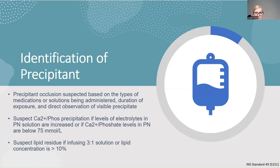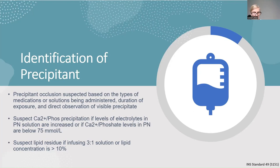To identify a precipitant, review the medication list for incompatible drugs — that's the pharmacist's wheelhouse. Also consider what was the last medication infused before the occlusion, as that may identify the precipitant. Sometimes you can see it in the line by color — rifampin or iron. The treatment goal for precipitant occlusions is to increase the solubility of the precipitant so it can be reabsorbed.